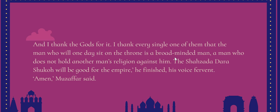Muzaffar Jung reads: 'I thank the gods for it — I thank every single one of them — that the man who will one day sit on the throne is a broad-minded man, a man who does not hold another man's religion against him. The Shahzada Dara Shikoh will be good for the Empire.' Muzaffar says a fervent 'Amen.' But we know Dara Shikoh could not become emperor — he was killed very brutally by his own brother — and Sarmad Kashani was executed in 1661 as an alleged atheist, reflecting how high the religious strife of the time truly was.